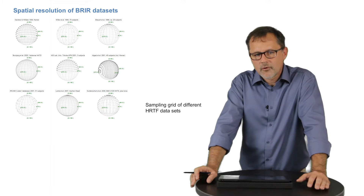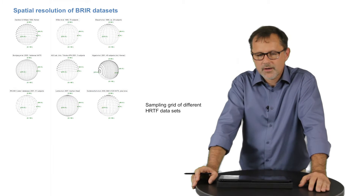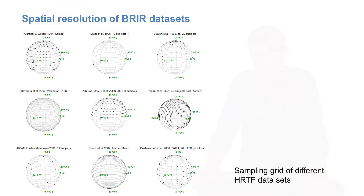For example, for HRTF datasets, as a special case of binaural impulse responses, several such databases have been measured and some are even publicly available on the Internet. For an equiangular grid with 2 degrees resolution, horizontally and vertically, you would need 180 times 90 and thus more than 16,000 measurements. On the other side, if you want to adapt the virtual sound field only to horizontal head movements within, say, plus minus 70 degrees, which is typical for a seated listener, 71 measurements will be enough.